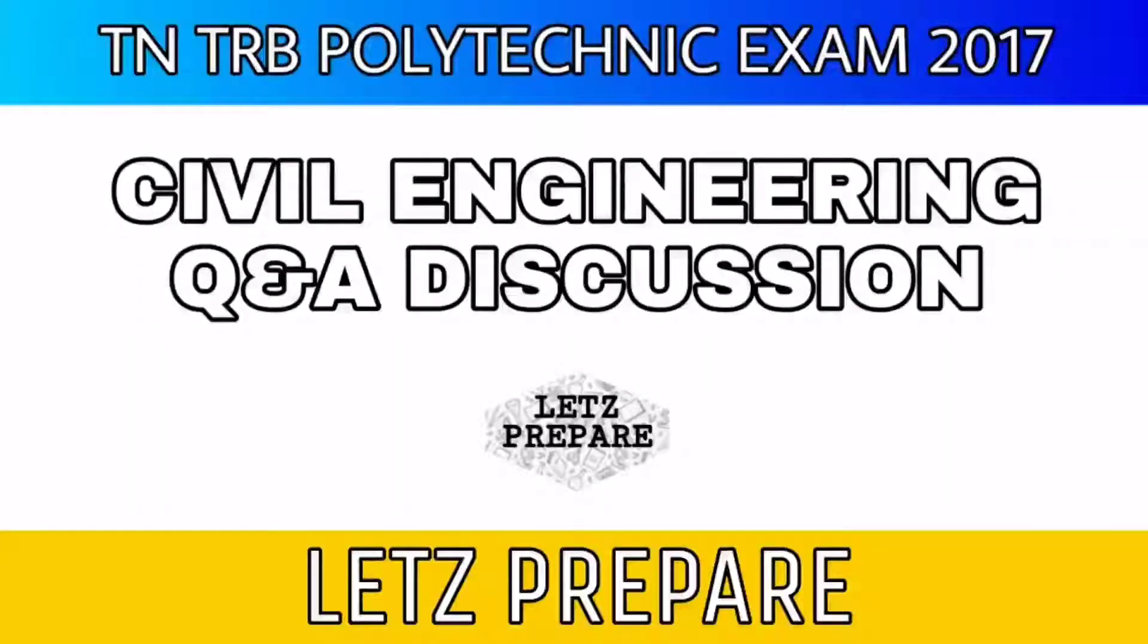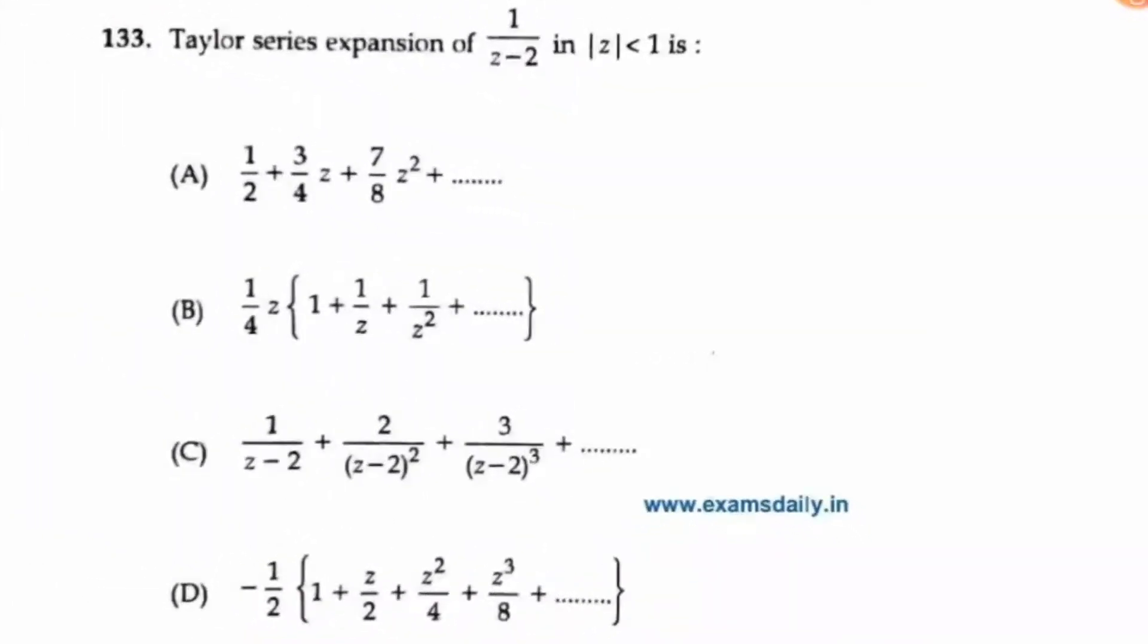Let's prepare on the TRB Polytechnic Exam 2017 Civil Engineering question paper. The Taylor series expansion of 1/(z-2) within the range where the modulus of z is less than 1. They have given the options.